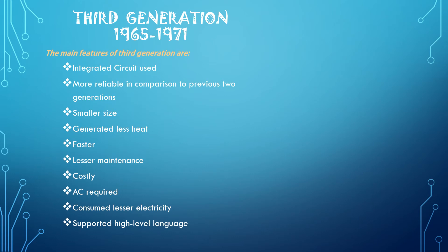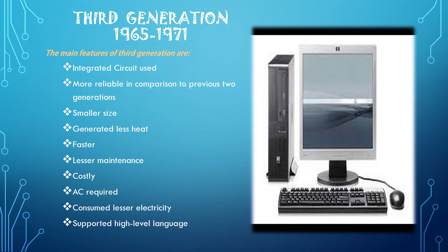In this generation, remote processing, time sharing, and multi-processing operating systems were used. High-level languages like FORTRAN, COBOL, and Pascal were used during this generation. Computers were faster, generated less heat, were really small in size, supported high-level languages, consumed less electricity, but still needed AC to cool down because they still produced some heat.